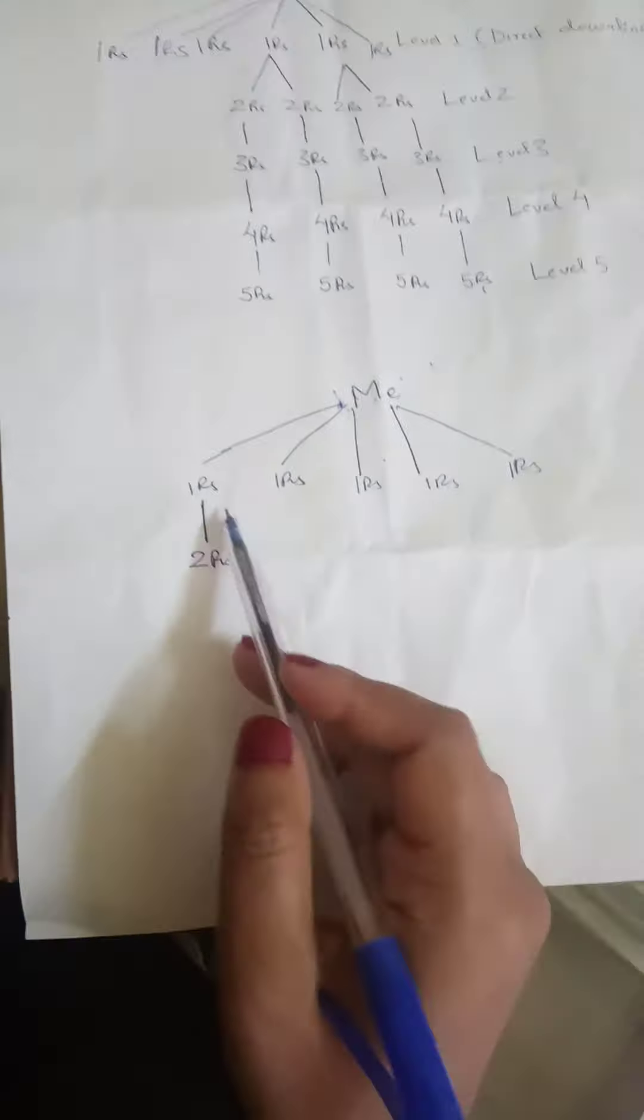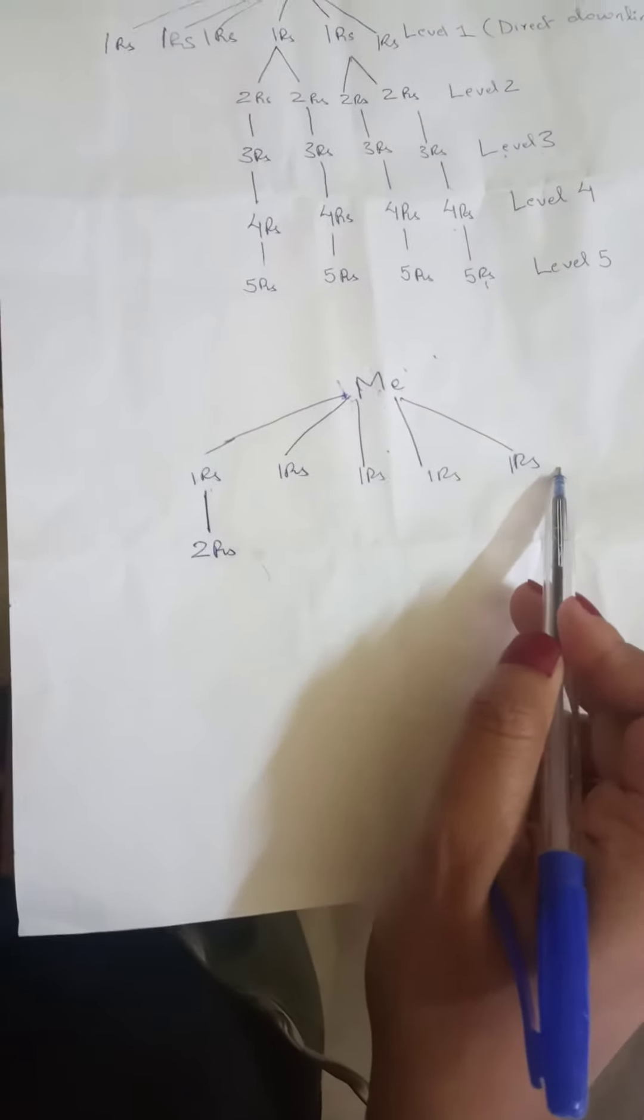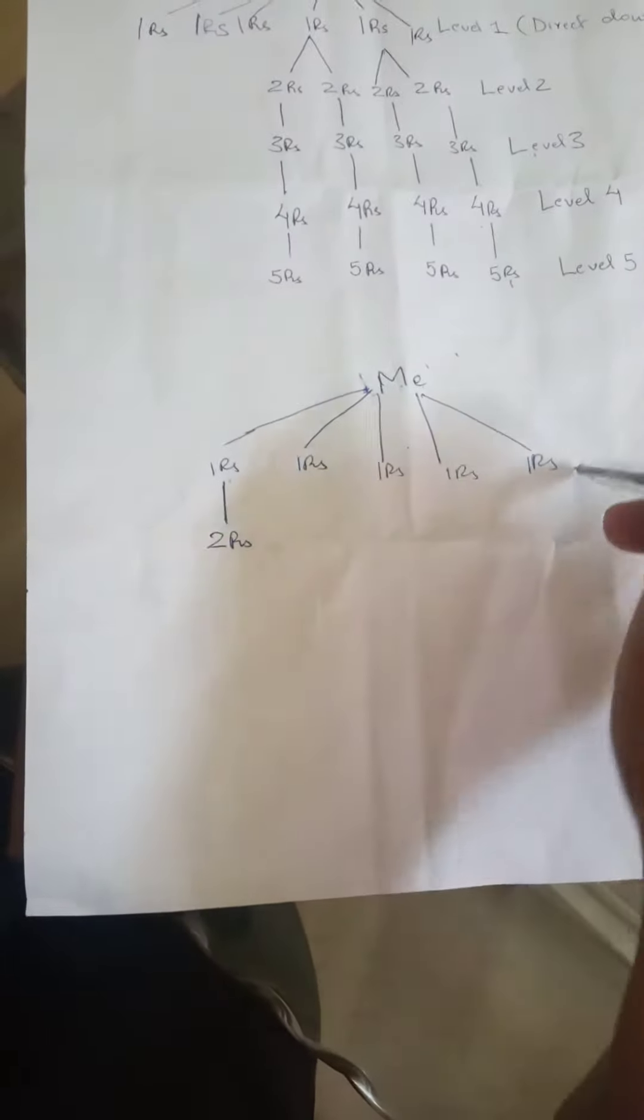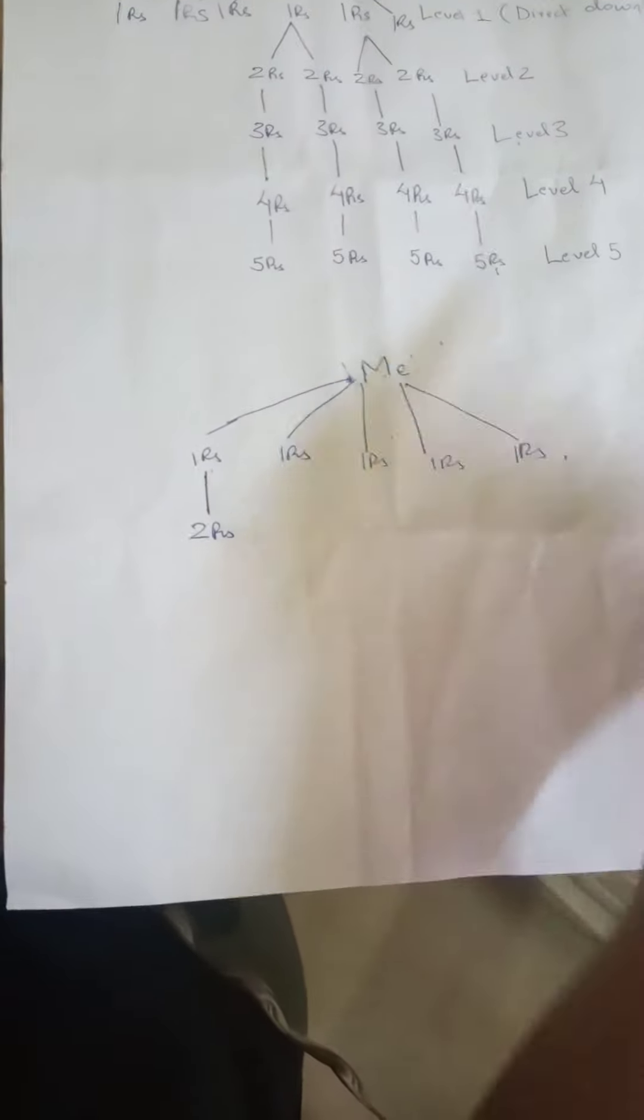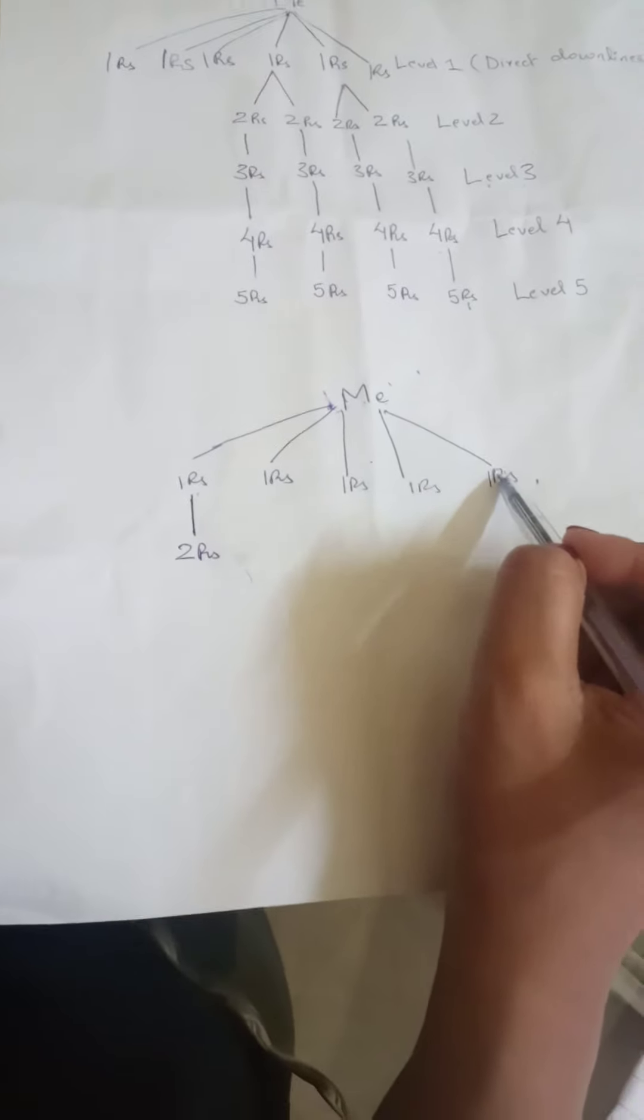Now here I've got five direct downlines. One, two, three, four, five. So I can qualify up to level four. I've got five, so I can qualify up to level four as I've explained earlier.